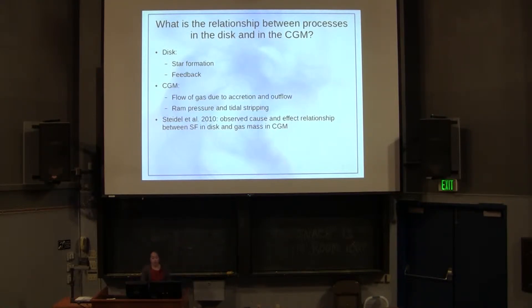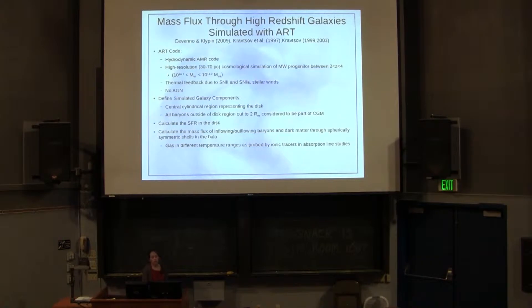In observations, observations have observed the cause and effect relationship between star formation in the disk and gas mass in the CGM. For example, the absorption line work of Steidel et al. On the theory side, we would like to study this question by looking at the mass flow of materials through the CGM in high redshift galaxies using galaxies simulated with the ART code.